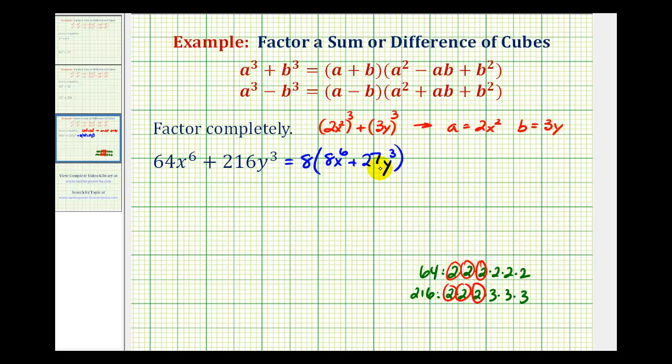So now our sum of cubes will factor into a binomial and a trinomial. We'll still have this extra factor of 8, then we'll have a binomial times a trinomial. Our binomial factor is going to be a + b, which in this case would be 2x^2 + 3y.